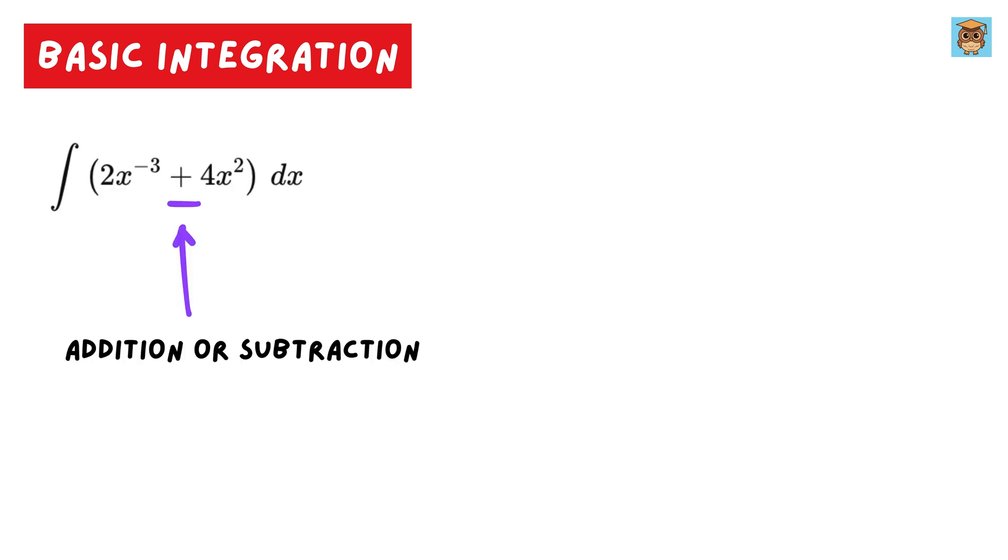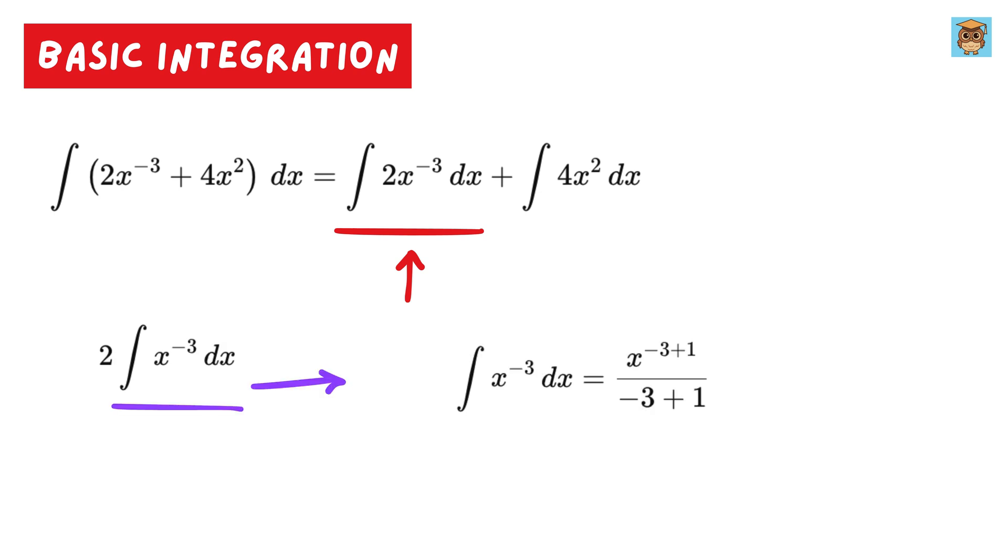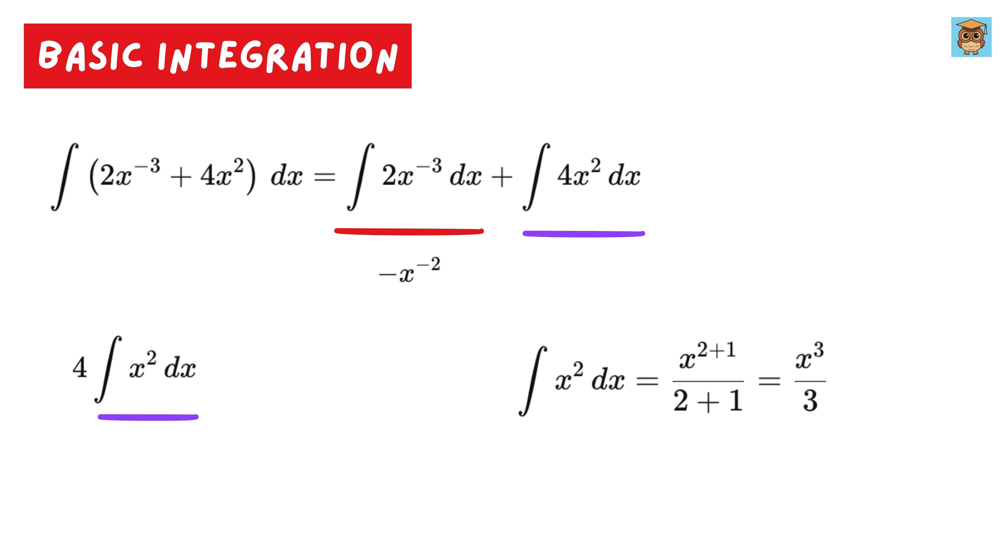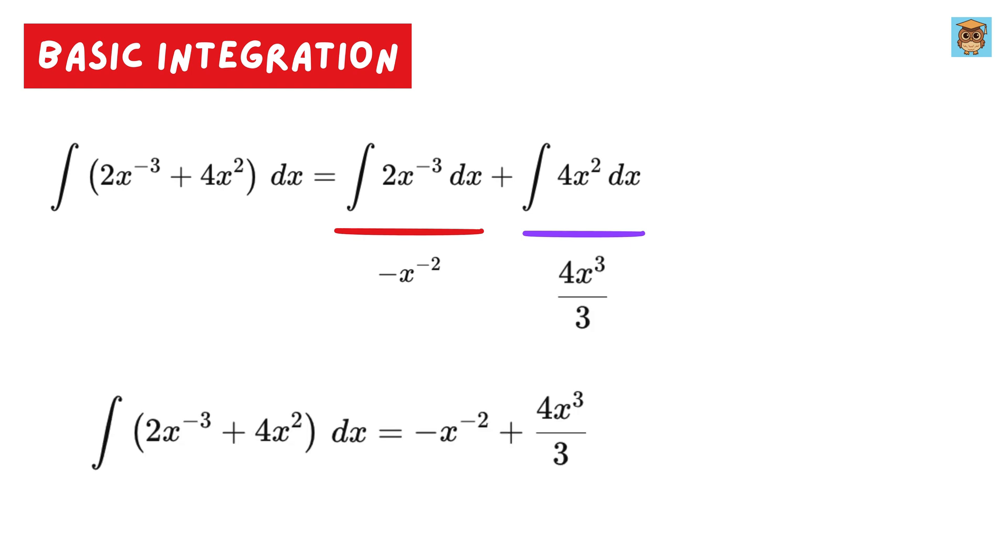Now solve for this. Whenever we have additions inside the integral, which means adding two different functions, we can simply separate them out into two different integrals like this. So we will tackle them separately. First consider this, take 2 outside. Then this will become x to the negative 3 plus 1 over negative 3 plus 1, or x to the negative 2 over negative 2. Now multiply it with this 2 to get minus x to the negative 2. For this part, take 4 outside, and integral of x square will become x cube over 3, or this will be 4x cube over 3. So the final answer will be 4x cube over 3 minus x to the negative 2, and this plus c.